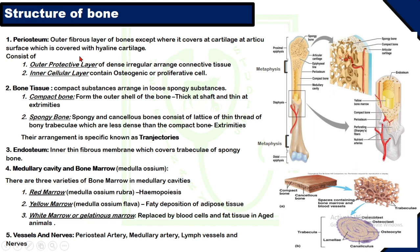Before going to the structure of bone, we should know the parts and divisions of bone. Bone is divided into three parts: number one, diaphysis — also called the body of the bone; number two, epiphysis — also called the extremities, which includes the proximal extremity and the distal extremity; and number three, metaphysis — the area between the diaphysis and epiphysis. The metaphysis is the place where the epiphyseal growth plate is found, where ossification takes place until maturity to increase the length of the bone.